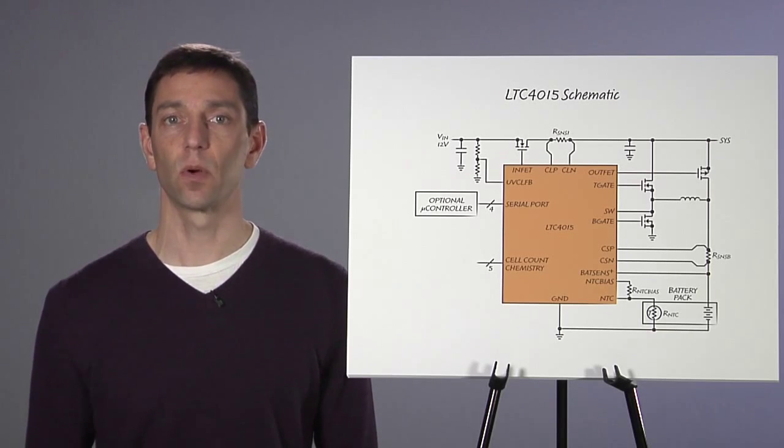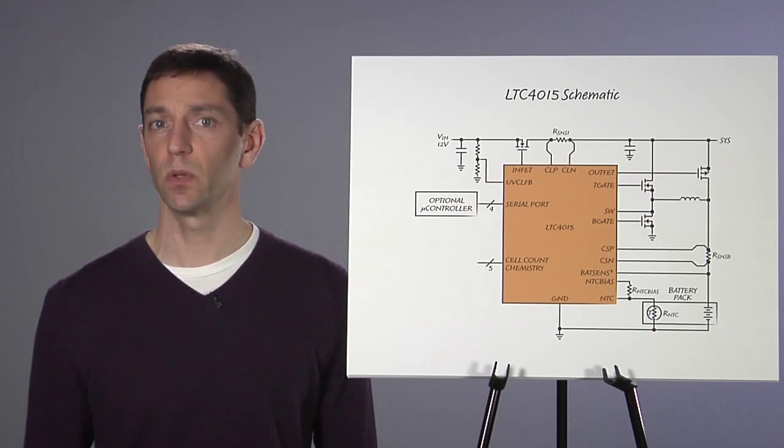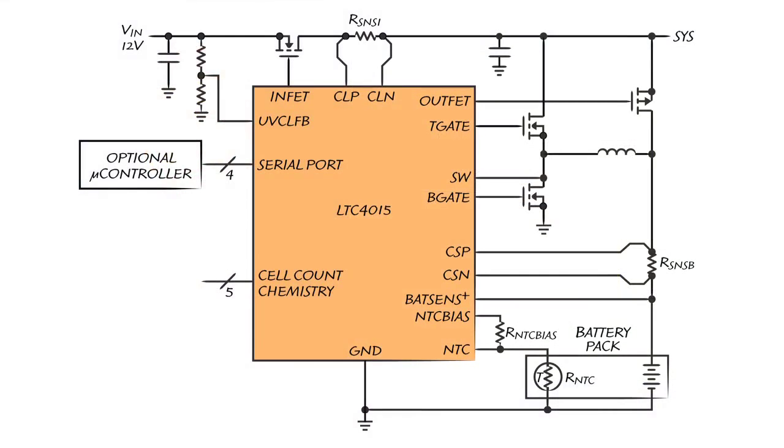The LTC4015 is well-suited for charge currents that range from 1 amp up to at least 12 amps. To help ensure that current goes where it should, and to prevent it from going where it should not, the LTC4015 includes drivers for an input FET and an output or battery FET.